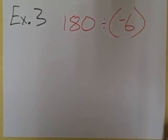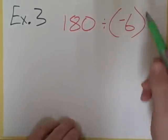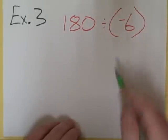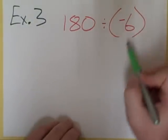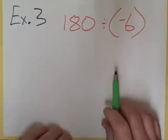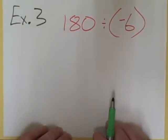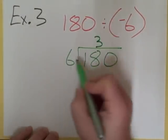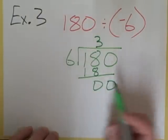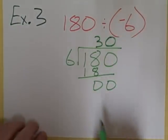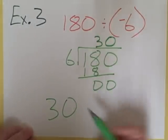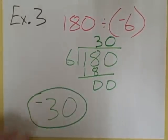Now let's take a look at some division problems. In example one, we have 180 divided by negative six. You do notice that the negative six is in parentheses, but the purpose of these parentheses is just to separate the negative six from the division sign — they do not mean multiplication here. We're dividing six into 180. Six goes into 18 three times; six times three is 18. Subtract, you get zero. Bring down your zero; six goes into zero zero times. So 180 divided by six is 30, but one number is positive and the other is negative, so the signs are different and the answer is negative.